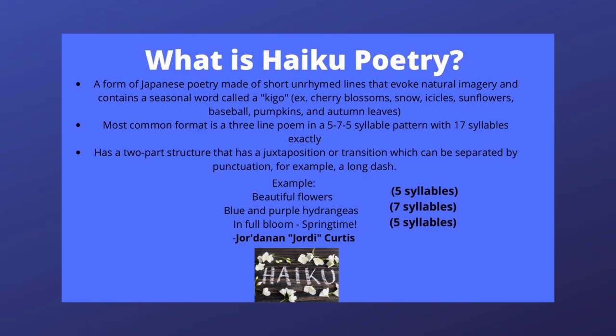When a haiku is written in English, the most common format is a three-line poem in a 5-7-5 syllable pattern with 17 syllables exactly. So the first line has five syllables, the second line has seven syllables, and the third line has five syllables. The poem also has a two-part structure with a juxtaposition or transition where you're comparing or contrasting two elements, which can be separated by punctuation, for example a long dash.